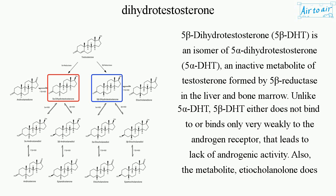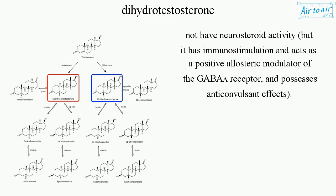Also, the metabolite etiocholanolone does not have neurosteroid activity, but it has immunostimulatory properties and acts as a positive allosteric modulator of the GABA receptor, and possesses anticonvulsant effects.